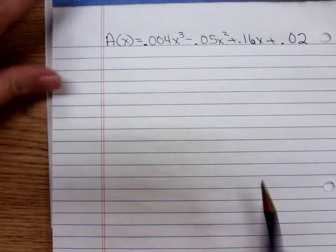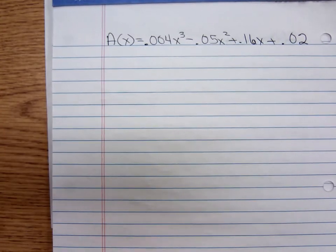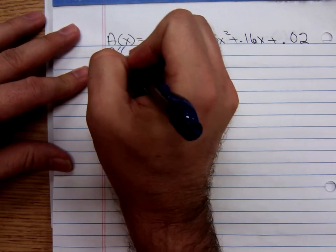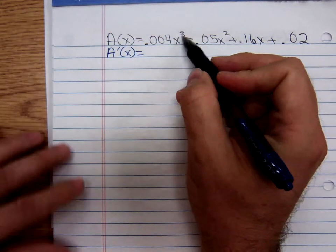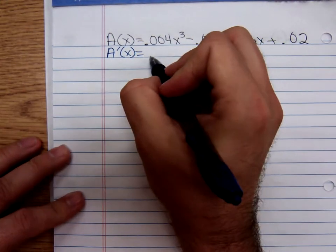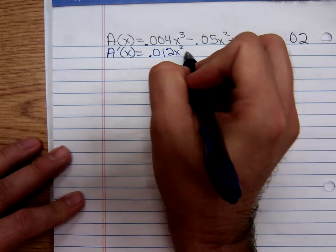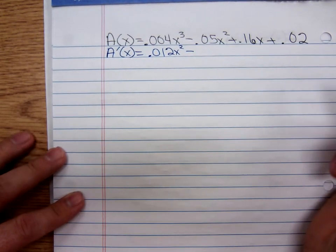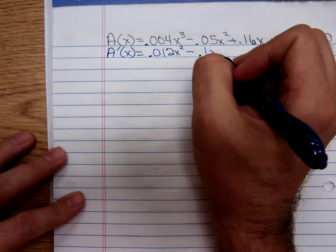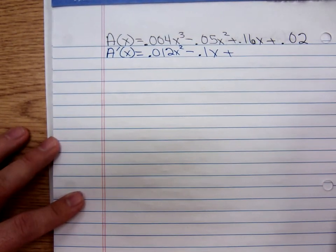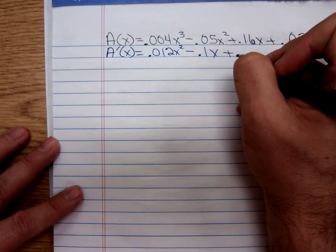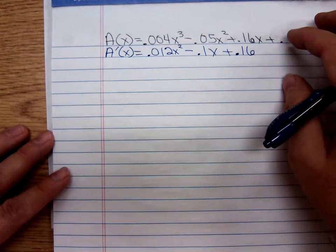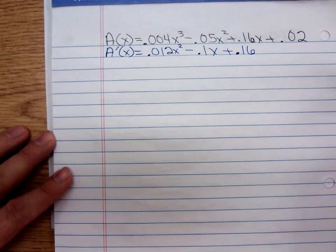Let's find the derivative. A'(x) = 3 times 0.004, that's 0.012x² minus 0.05 times 2, that's 0.1x plus 0.16. The derivative of that 0.02 is zero.